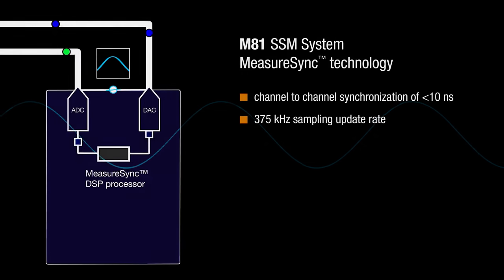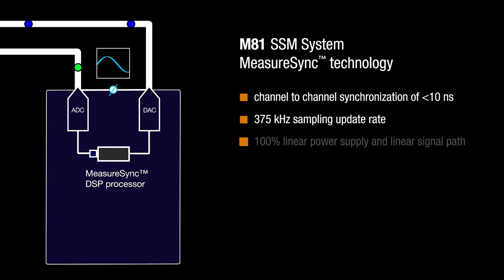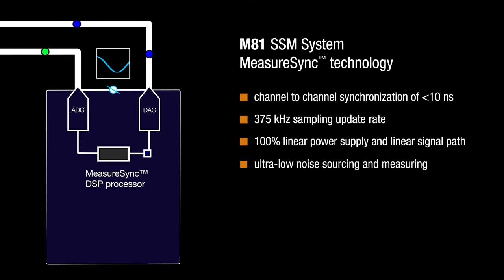Not only are the M81 signals precisely synchronized, they're exceptionally high quality. A 100% linear power supply and a linear signal path from the instrument to DUT ensures the M81 provides ultra-low noise sourcing and measuring on par with the best-researched DC and AC nanovoltmeters and lock-in amplifiers available today.